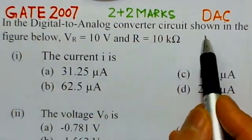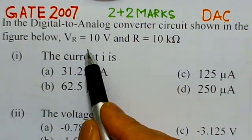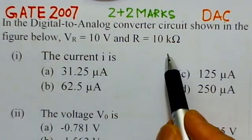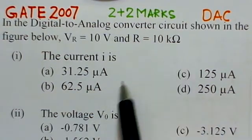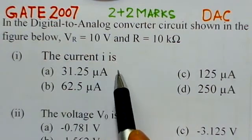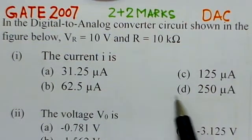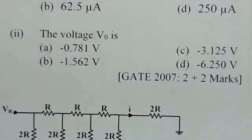In the digital-to-analog converter circuit shown in the figure, Vr is given as 10 volts and resistance R is given as 10 kilo ohms. The first part requires us to determine the current I in the network, and the second part is to determine the output voltage V0 in the given network.